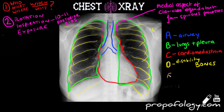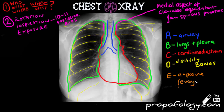Any fracture or displacement could imply damage to underlying structures. Lastly, E stands for exposure and everything else. We're going to look at the skin, check for any subcutaneous emphysema — which is air in the skin — any foreign fragments, and artifacts such as ECG leads or oxygen tubing that could confuse your picture. You should also look for any tubes that might have been inserted into the patient, such as an endotracheal tube, a nasogastric tube, or any central venous access.